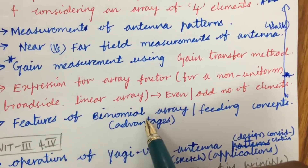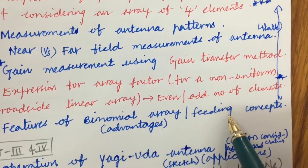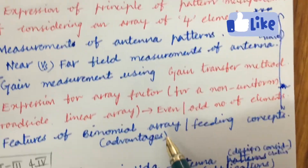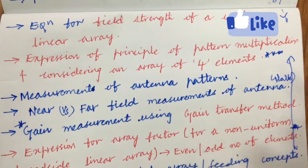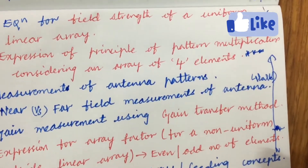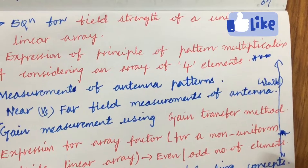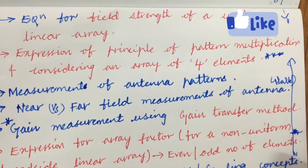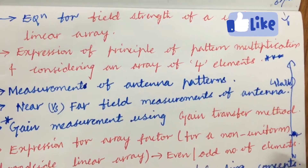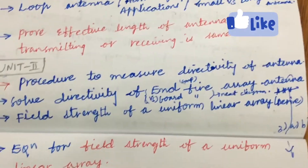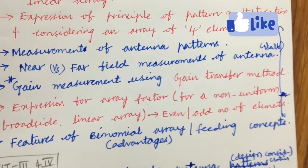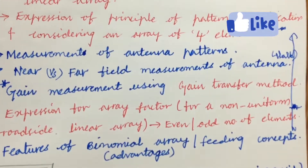The features of binomial array, its feeding concepts, and advantages are also important. Dear students, do not expect a direct 15-mark question in Antennas and Propagation, because it is all about theory with lots of definitions and derivations. Make sure to work out each and every part, write very neatly, and carry all your stationery to the examination hall.